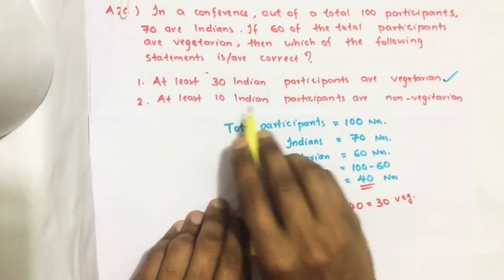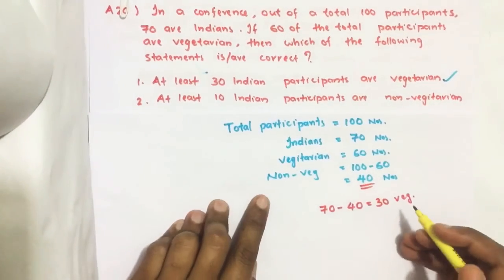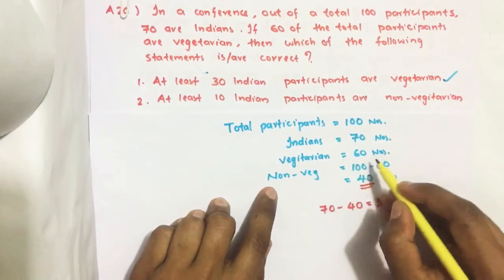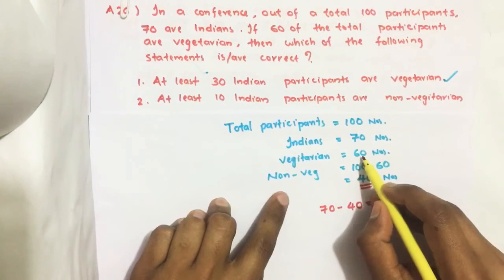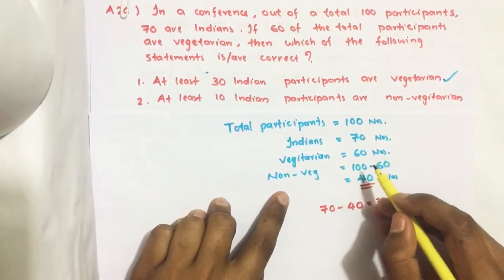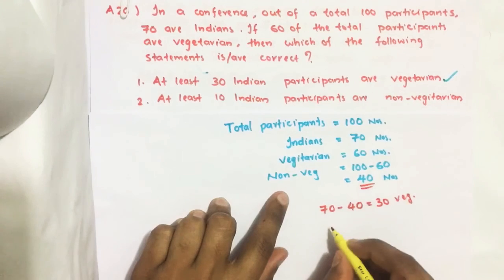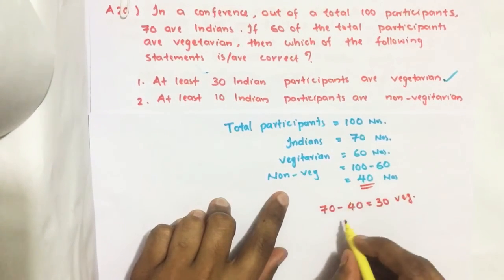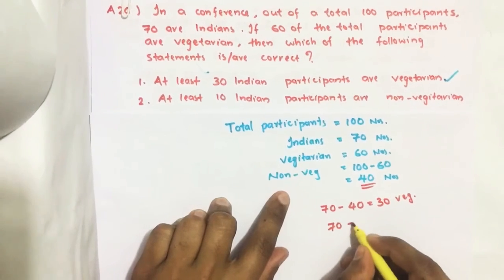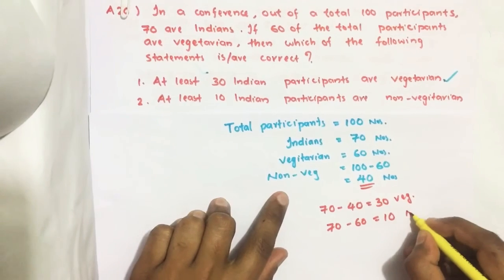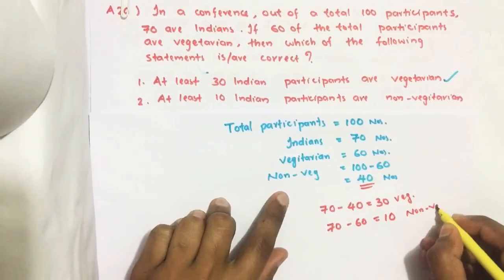At least 10 Indian participants are non-vegetarian. Here total vegetarian is 60. If all these 60 vegetarians are from India, then the number of people who are non-vegetarians from India is 70 minus 60.